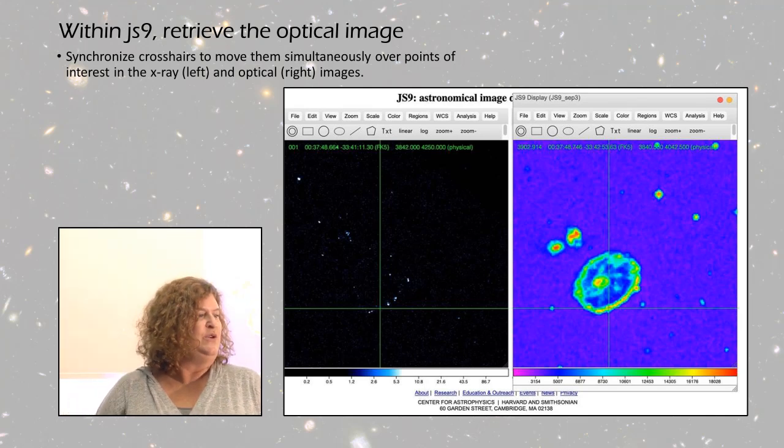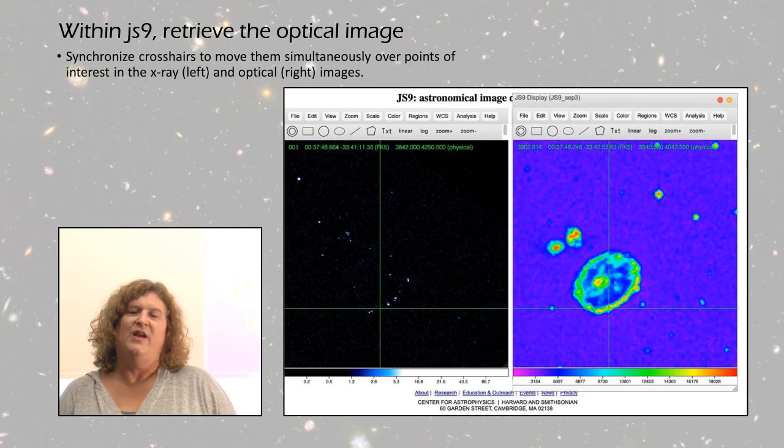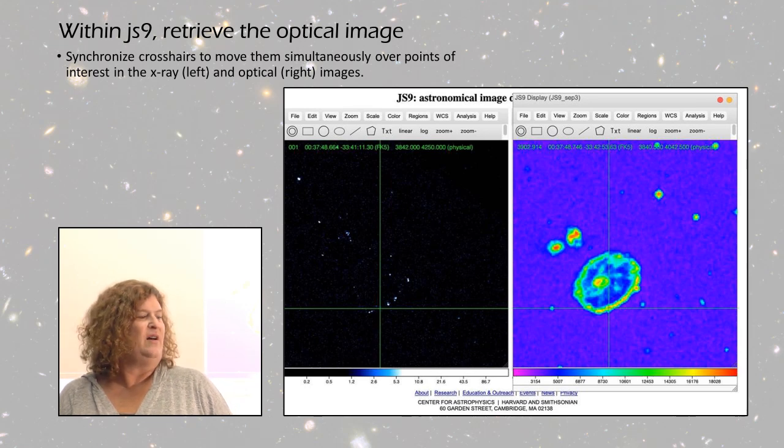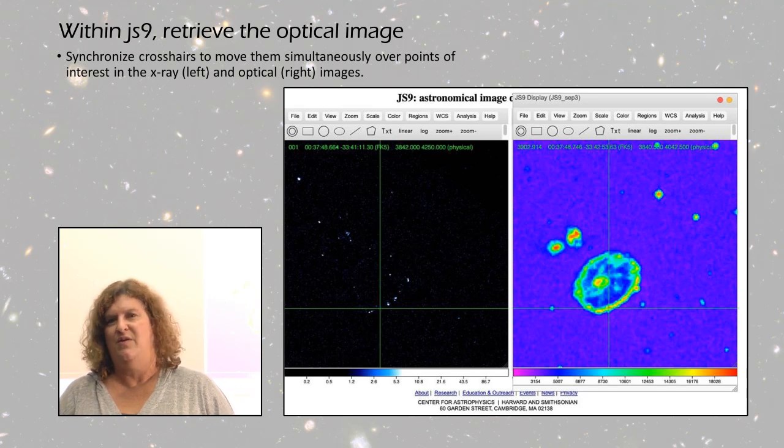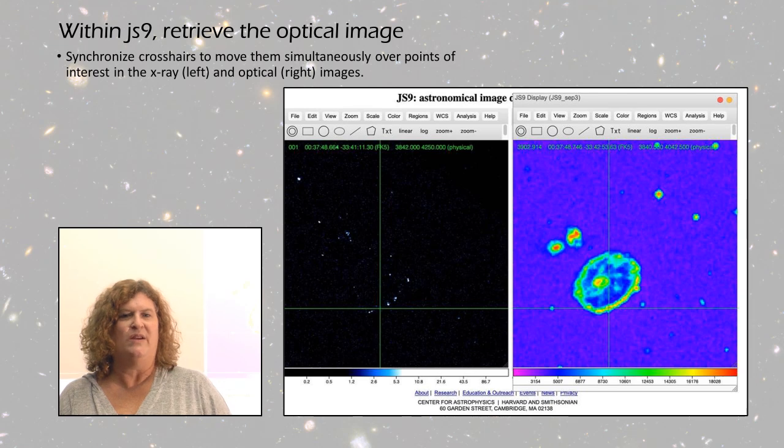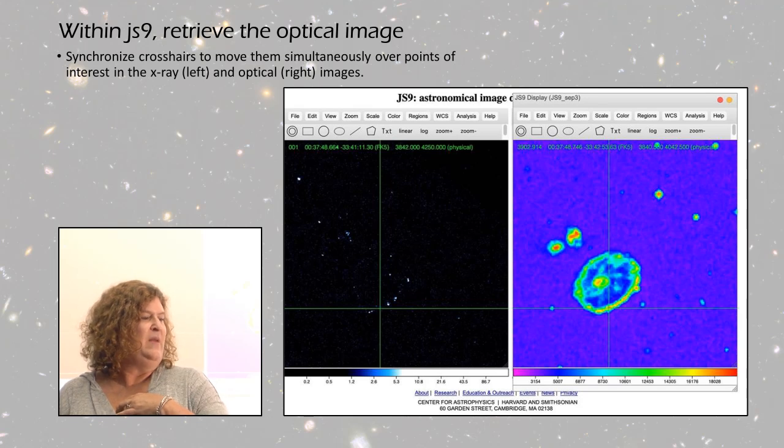In JS9, you would first bring in the x-ray image, which is on the left hand side of this screen. I played around with contrast and bias so you'd be able to see the x-ray point sources we're interested in. They're little white dots on that black background.